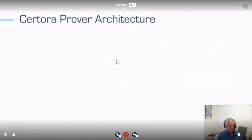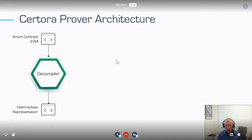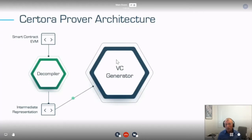How does the Certora Prover architecture work? The first part is unique: we have a decompiler that takes the smart contract EVM bytecode and performs clever analysis to produce a high-level intermediate representation — think something like Yul, or more. This is implemented by John in the Seattle office. This IR feeds into a Verification Condition Generator — 'VC' in formal methods means a method that converts the program into a formula, as we saw in Akush's talk.